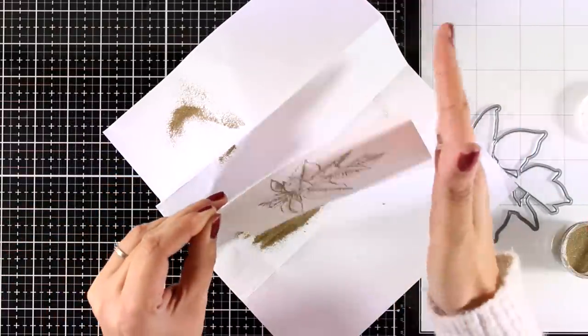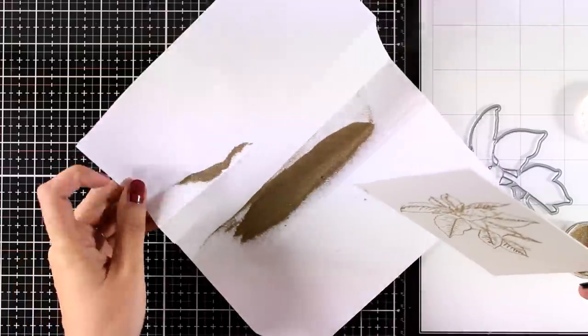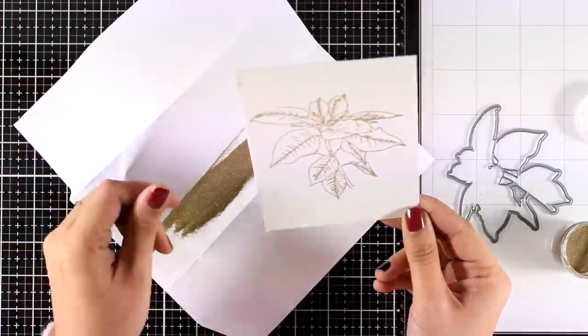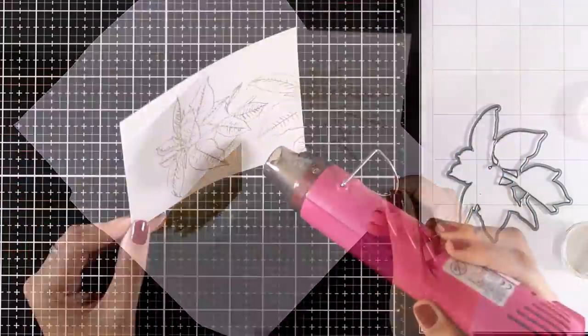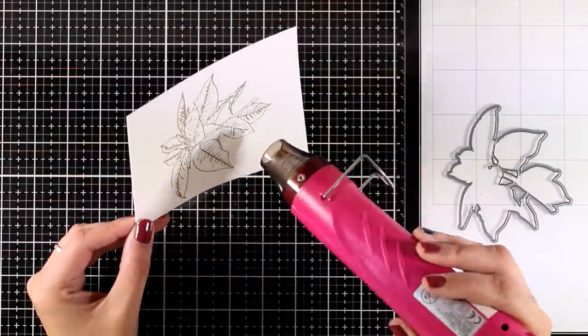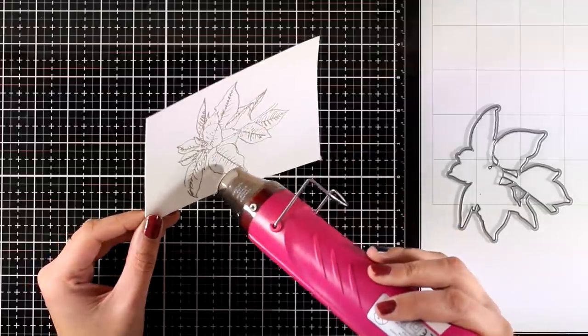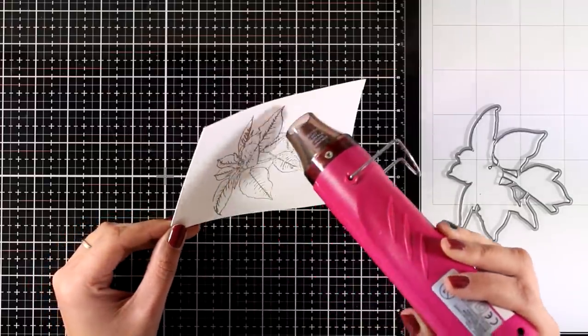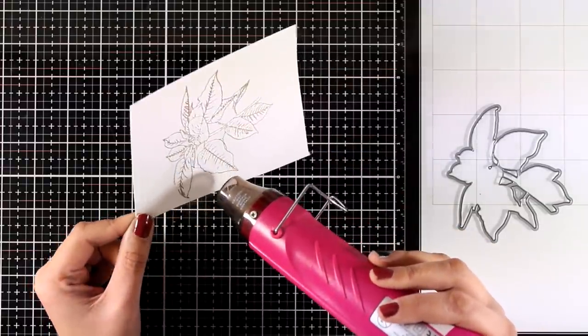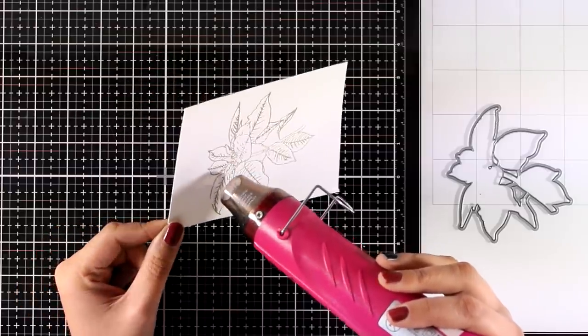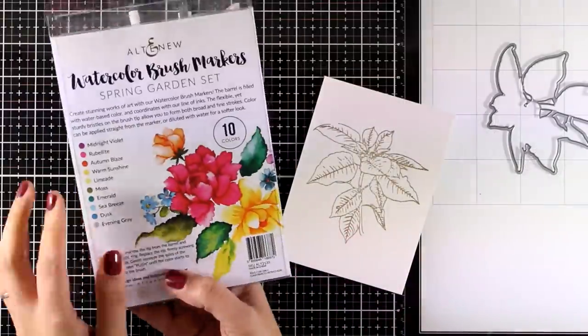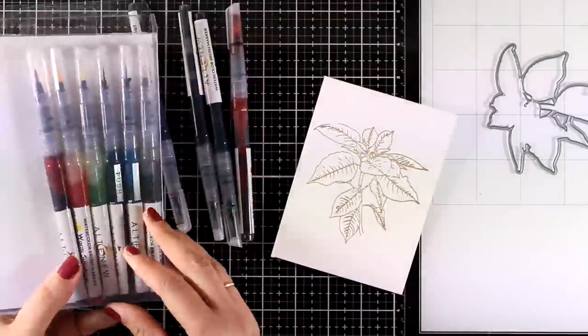And then I am going to apply some gold embossing powder. The embossing powder I am using is the Antique Gold by Altenew. Now I'm using my heat gun to melt the embossing powder, and when I don't want to have too much bleeding on a watercolor piece, I like to do this embossing because it creates a barrier between the areas on my image, so the colors are not going to bleed into each other.